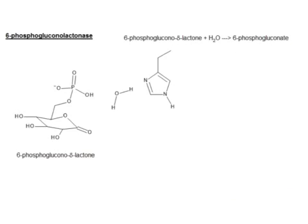The second reaction in the oxidative portion of the pentose phosphate pathway is mediated by the enzyme 6-phosphogluconolactonase. It takes the product from the last reaction, the glucose 6-phosphate dehydrogenase, which is 6-phosphoglucono-delta-lactone, and it pops it open into 6-phosphogluconate.